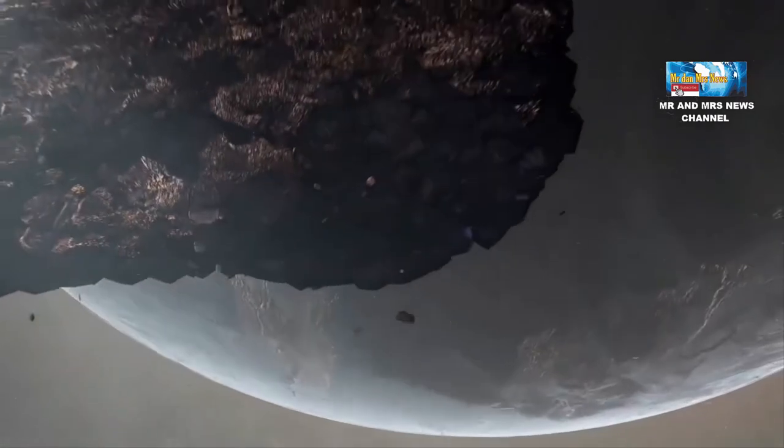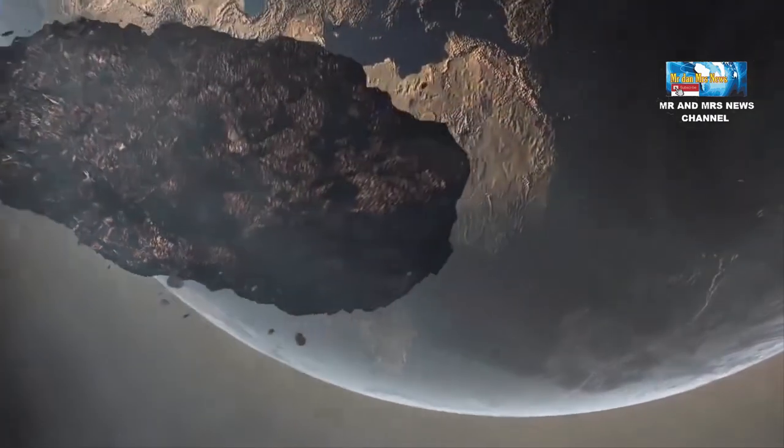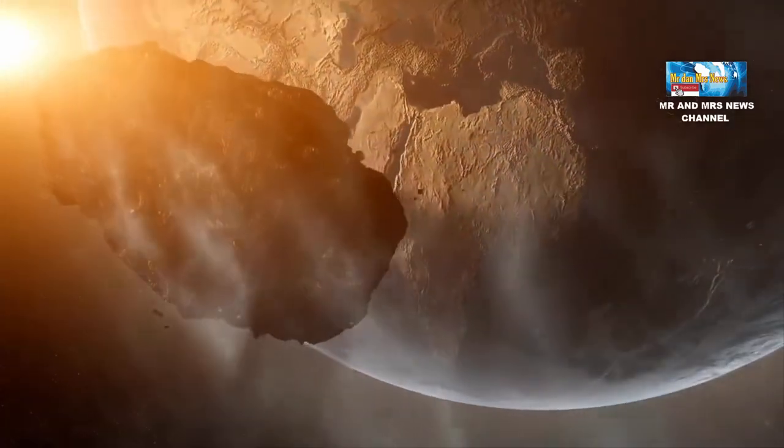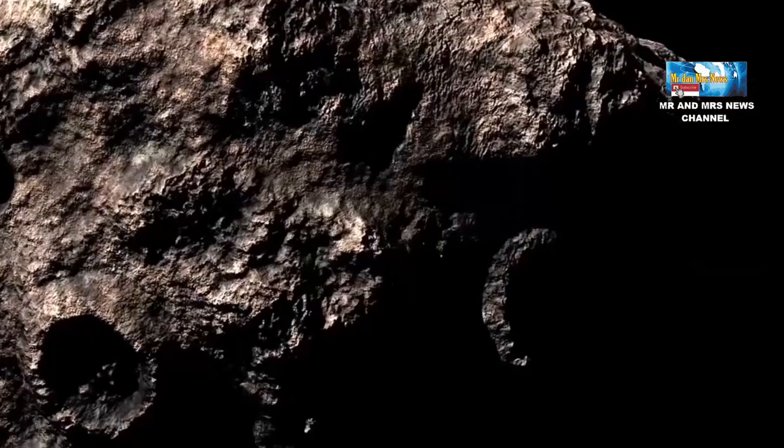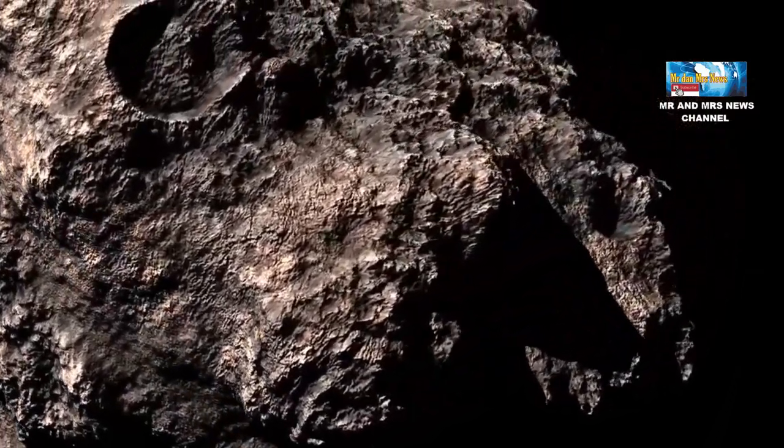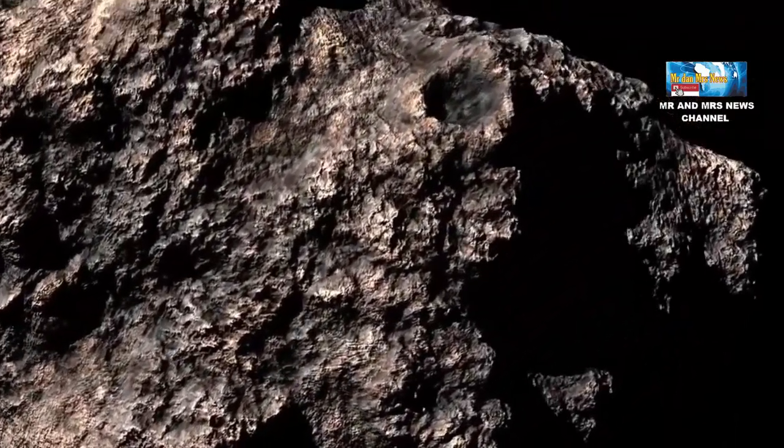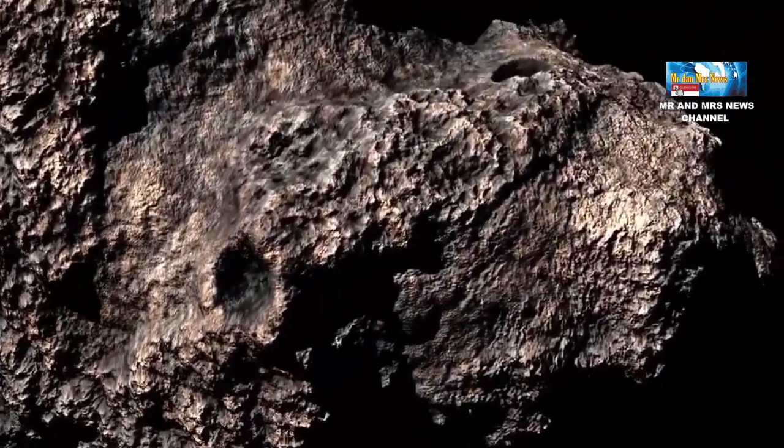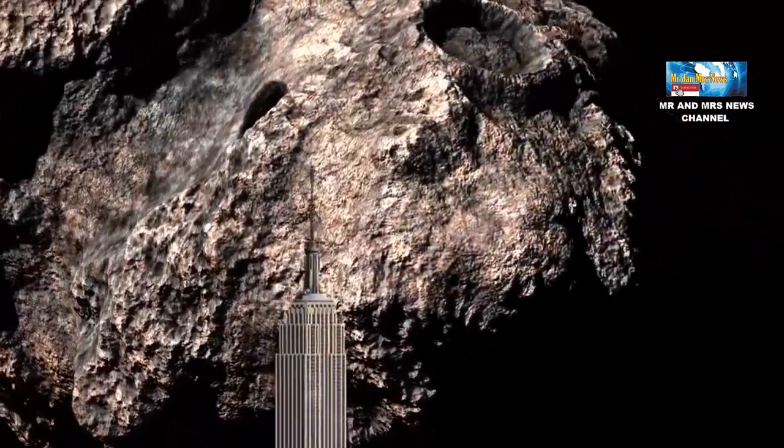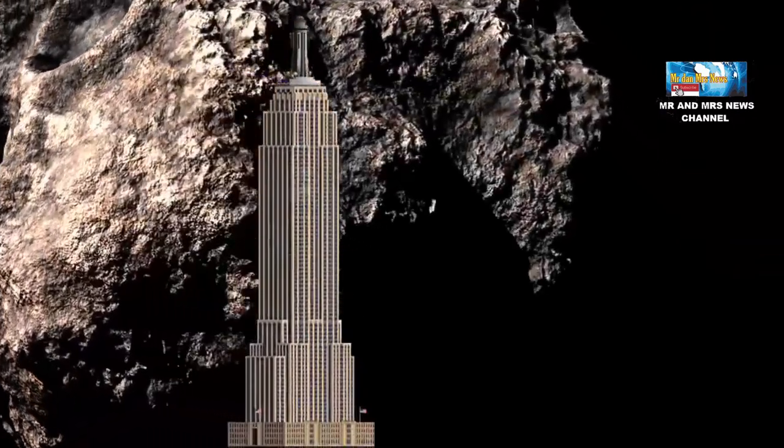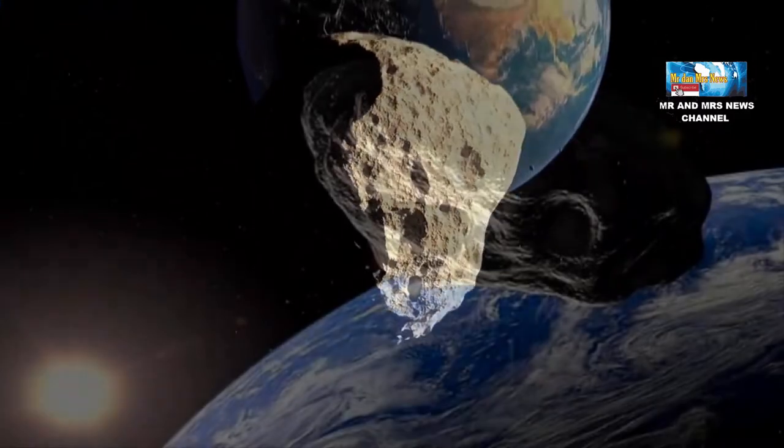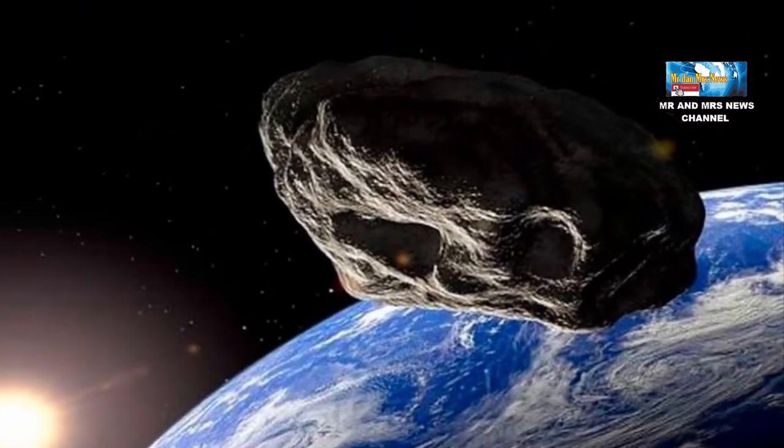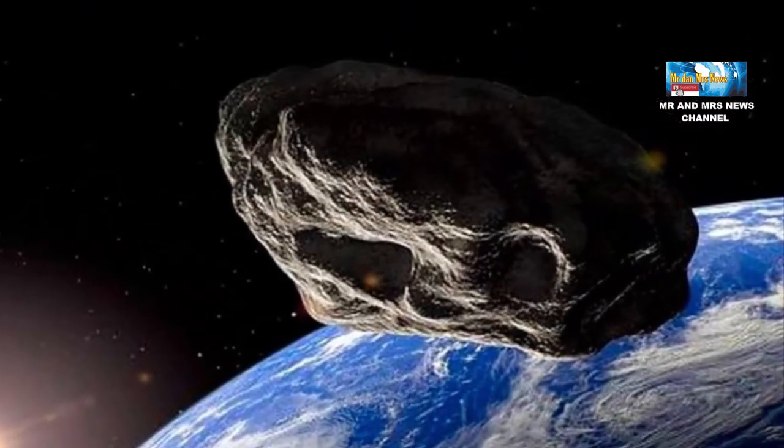The travel speed of giant asteroid 2001CB21 is 28,600 miles per hour. Furthermore, the estimated distance of this asteroid's path is also very close, more than 3 million miles. That distance equals 10 times the distance between Earth and the Moon. That's why even though it's classified as a hazardous asteroid, 2001CB21 is not worrying.